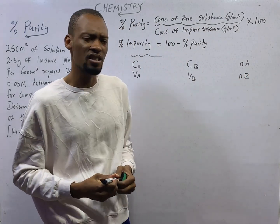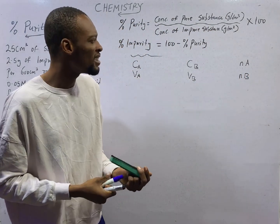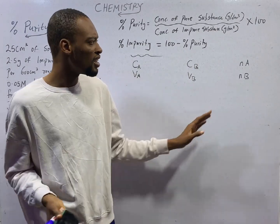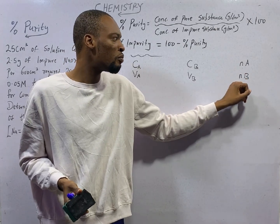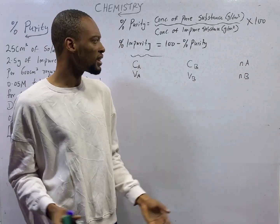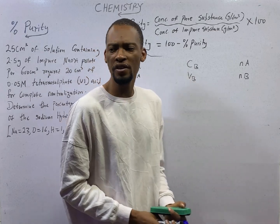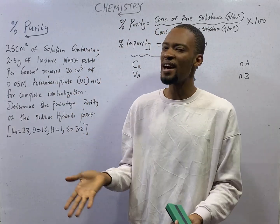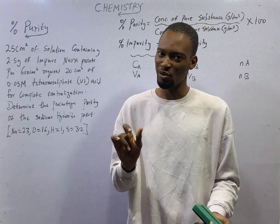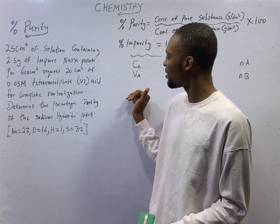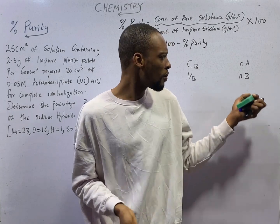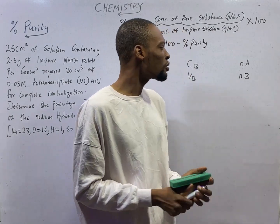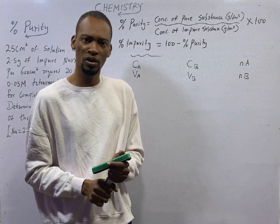In some cases, especially in JAMB, you will be given the equation of reaction. From there, you will know the number of moles of acid and the number of moles of base. But sometimes you will not be given it. In this question, you are not given the equation of reaction — it is very easy to derive it. You simply bring out the acid and base, then form the salt and water. From there, you will know the number of moles of acid and the number of moles of base.